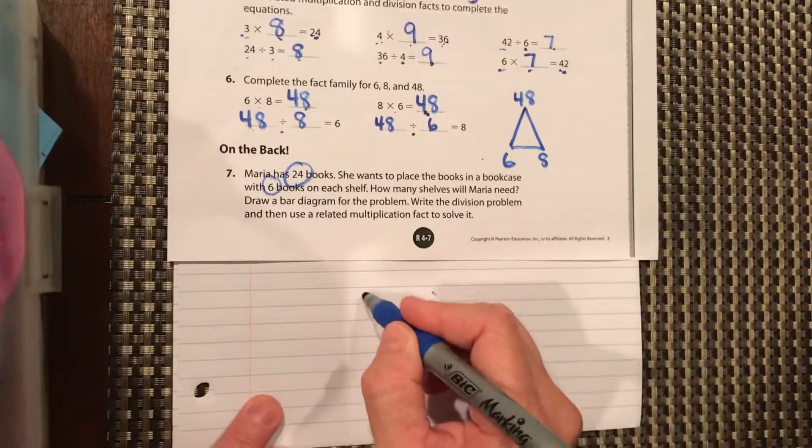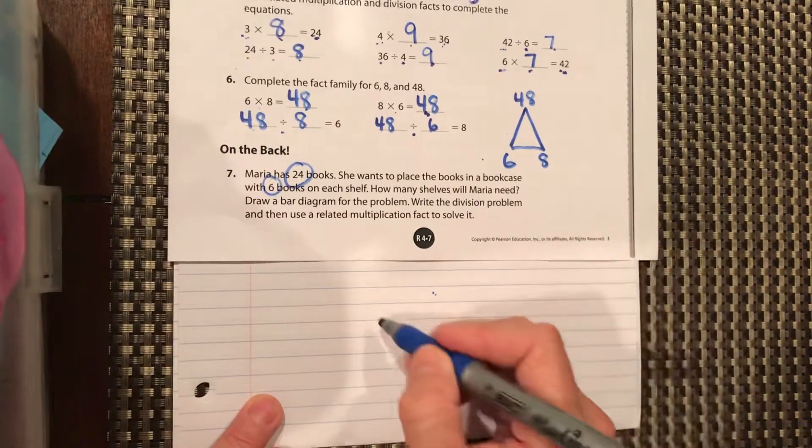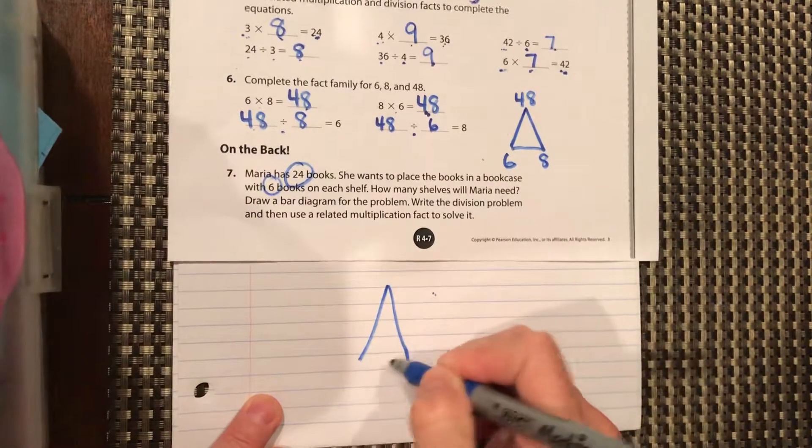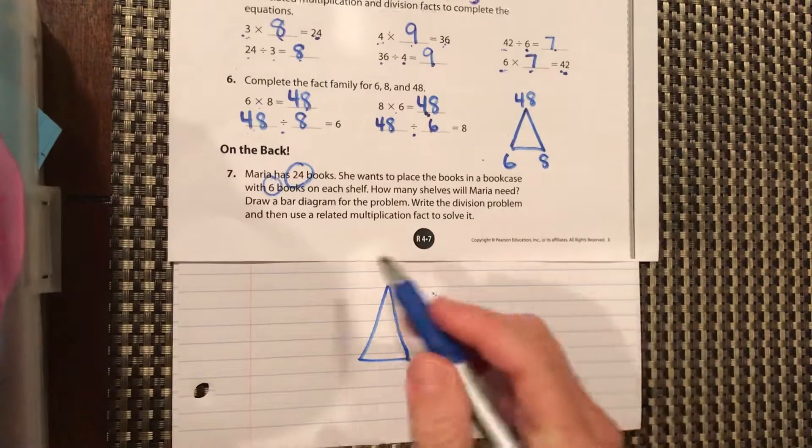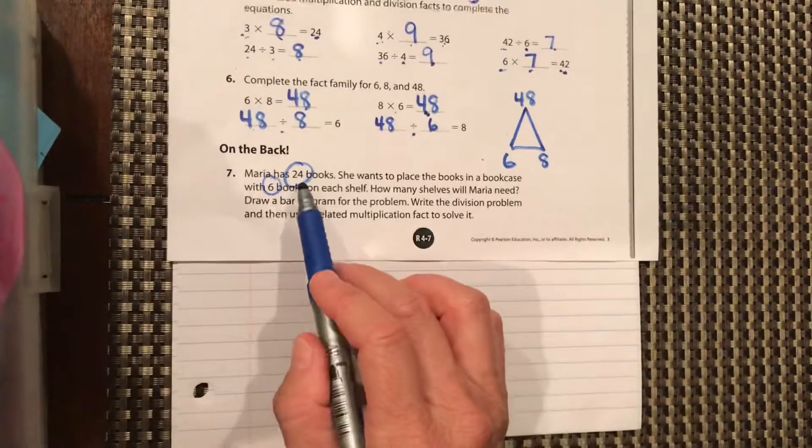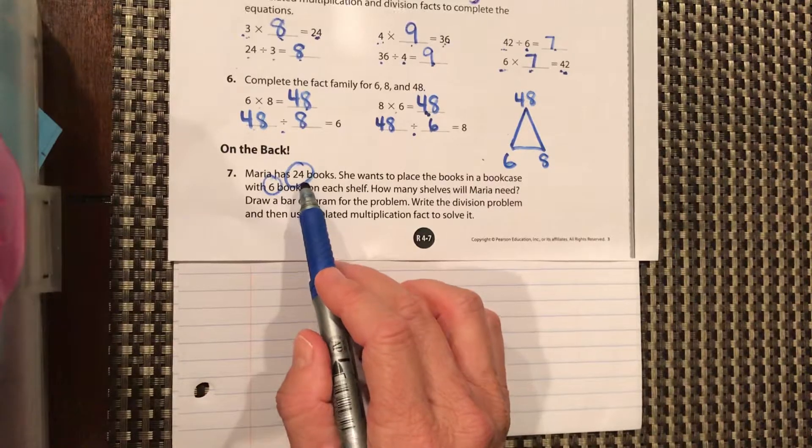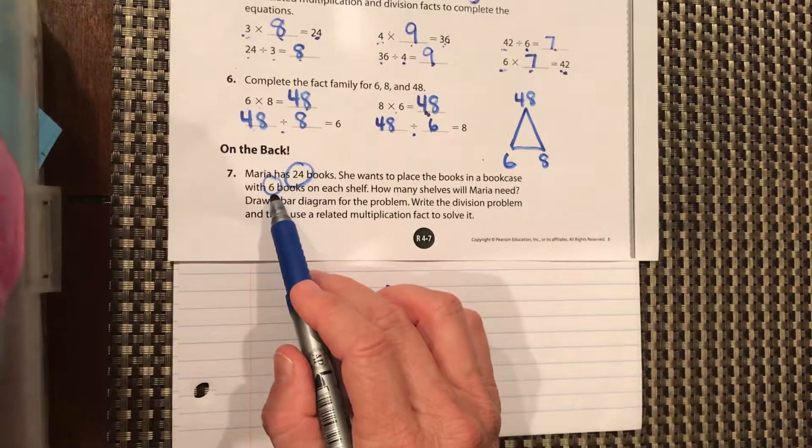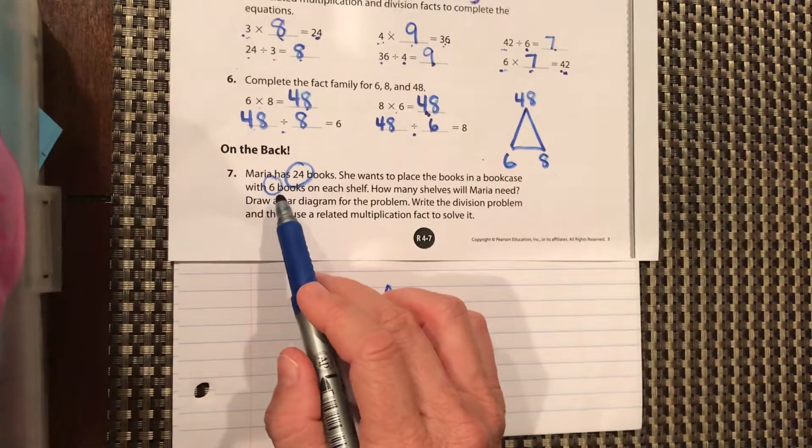So you can do it right over here on the back. We'll draw our fact family. So let's figure out if 24 is our total number that would go on the top. She has 24 books. She's going to divide them up into six books on each shelf. How many shelves will she need?